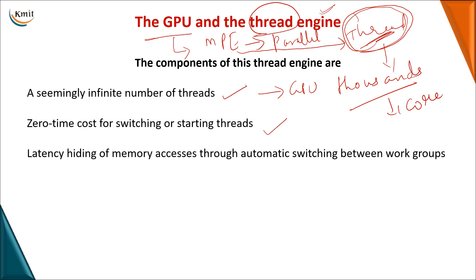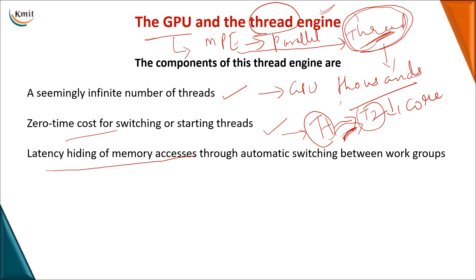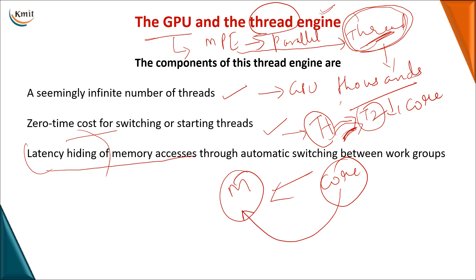Another key feature is zero cost time for switching. When thousands of threads are operating in parallel, you may be executing Thread 1 but require data from Thread 2, so you stop working on T1 and jump to T2 — this is called context switching. This switching is done in such a way that you incur very little time or cost. Because of this zero-cost switching feature, you also get latency hiding of memory access. Latency is the time required for a core to retrieve data from memory. Since switching time is very low, you can hide memory access latency, meaning you are able to get data from memory in less time.